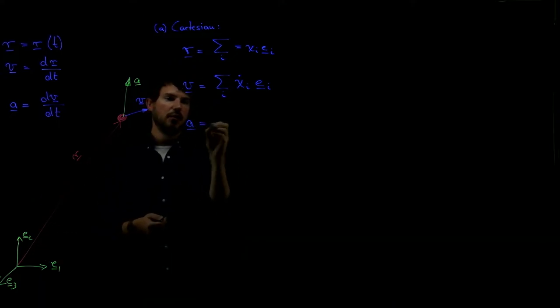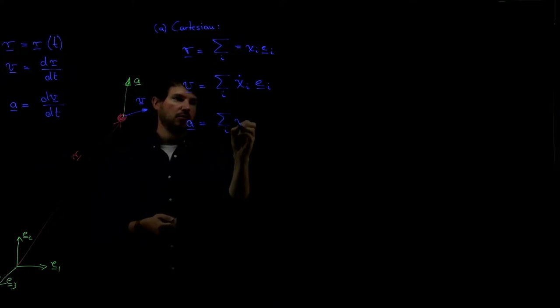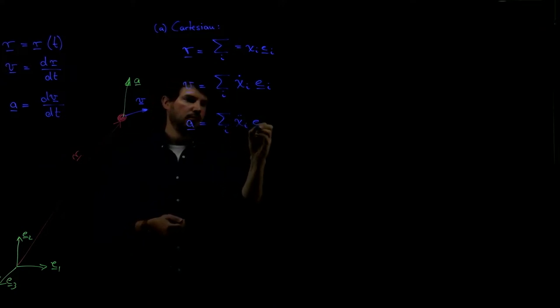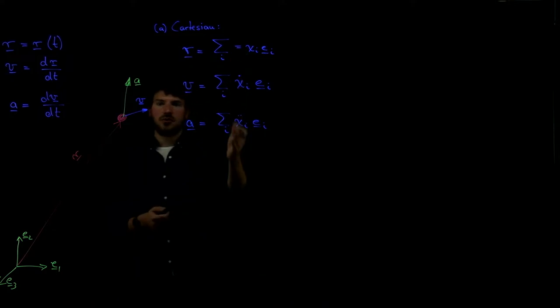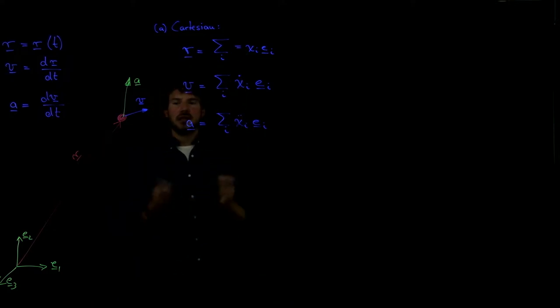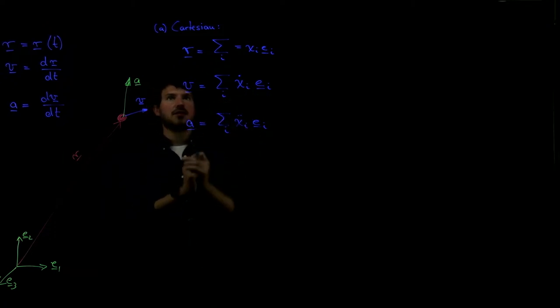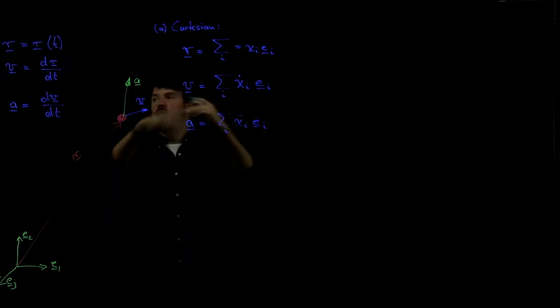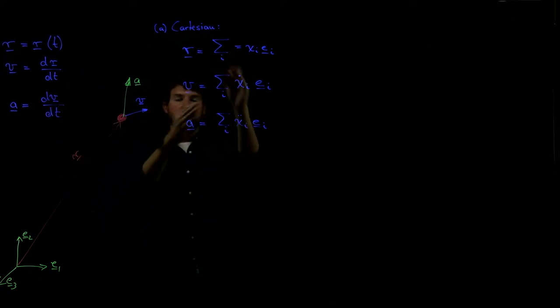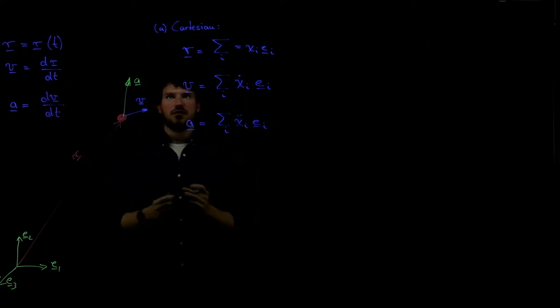This is convenient. It allows us to derive all three of those, sometimes even if we have only partial knowledge. We may know something about the velocity, something about the acceleration or about the position, and we can use these relations to relate them to each other or to find the missing information.